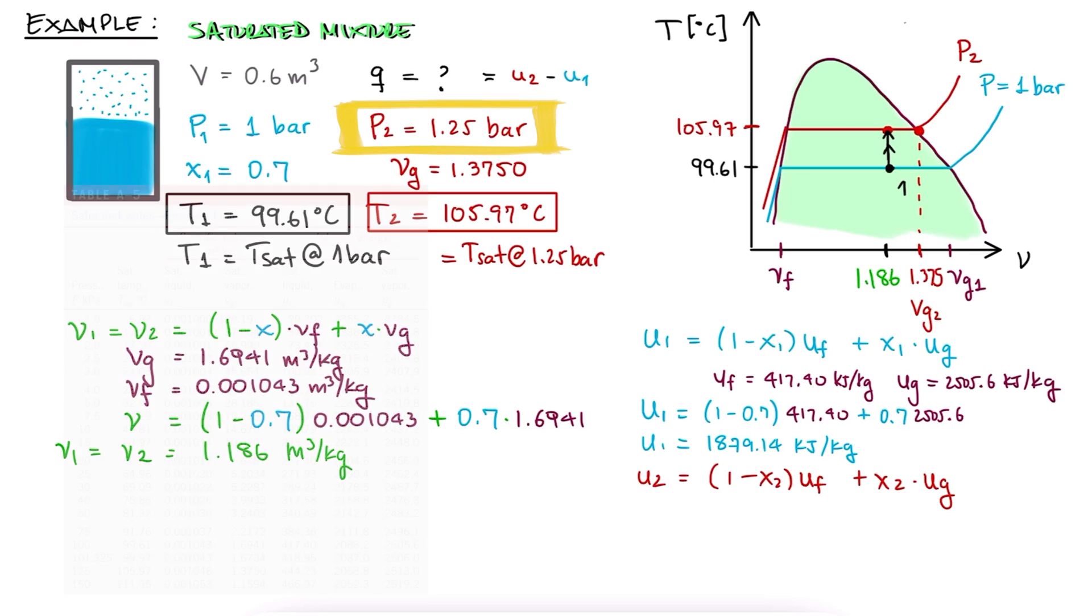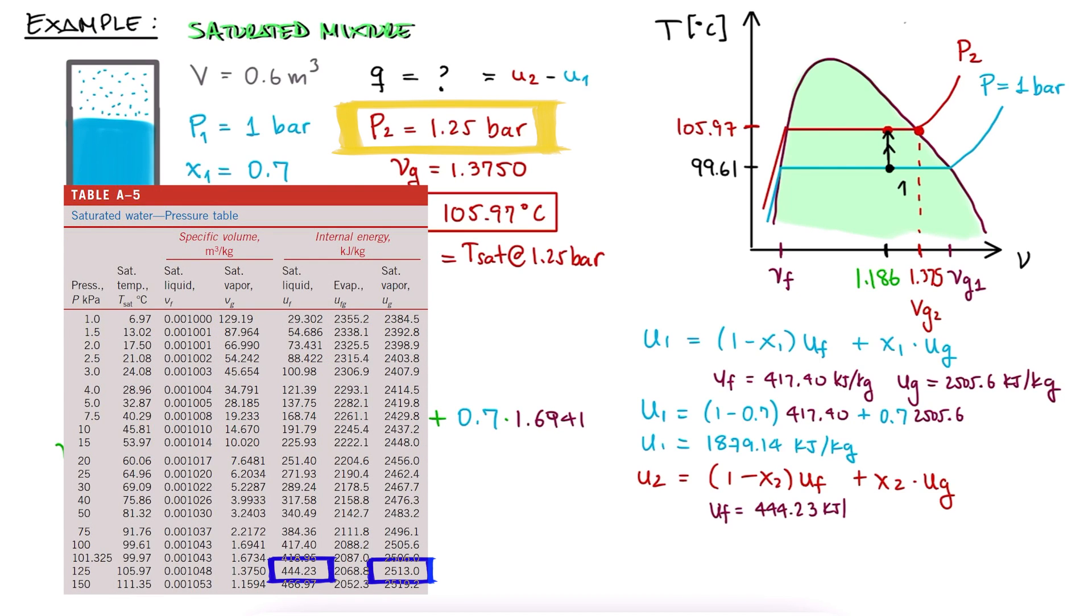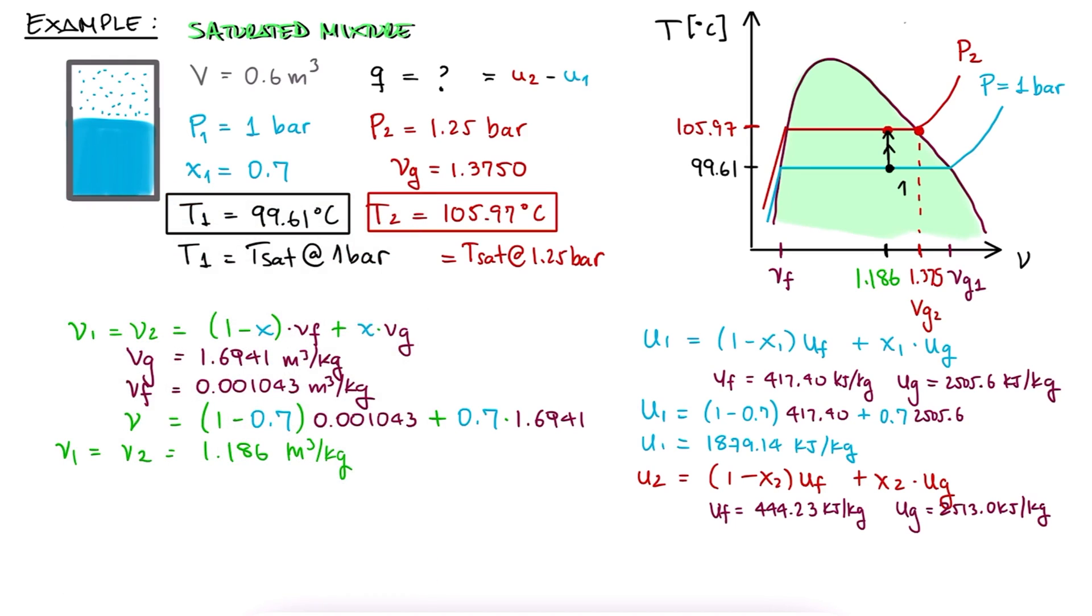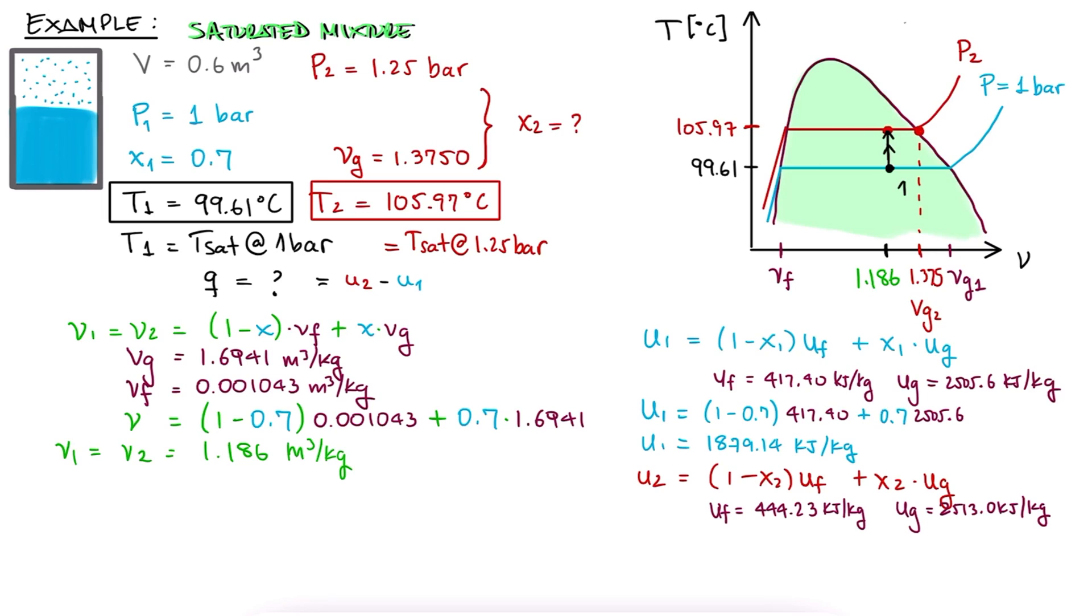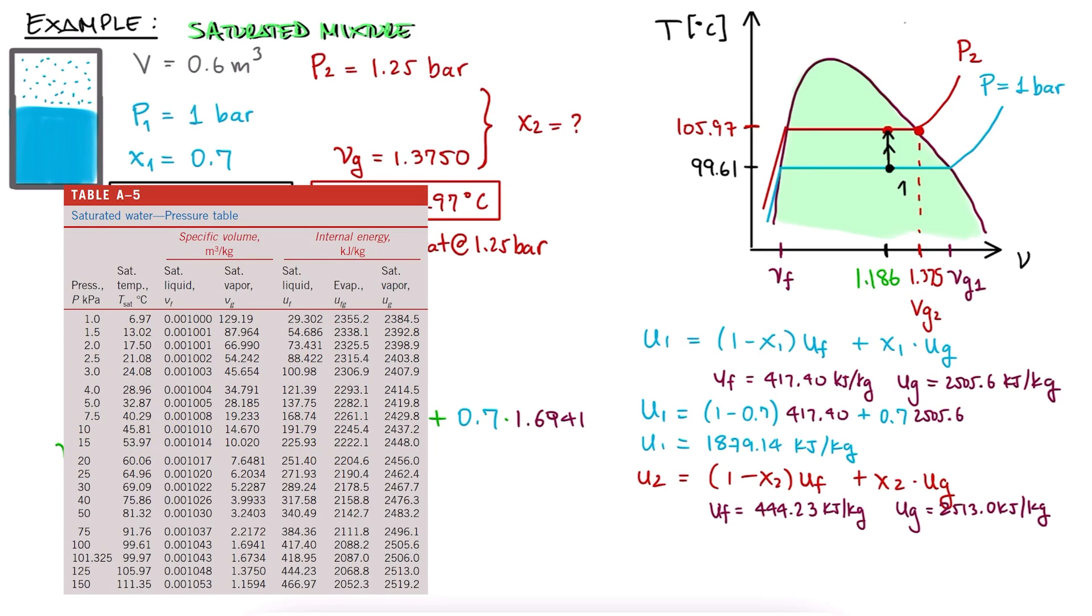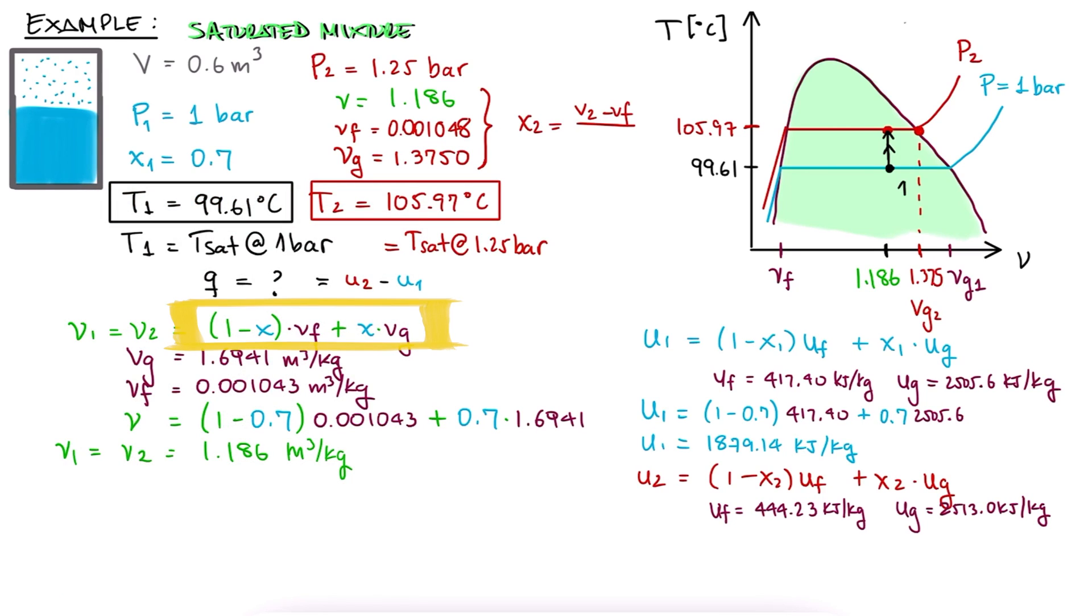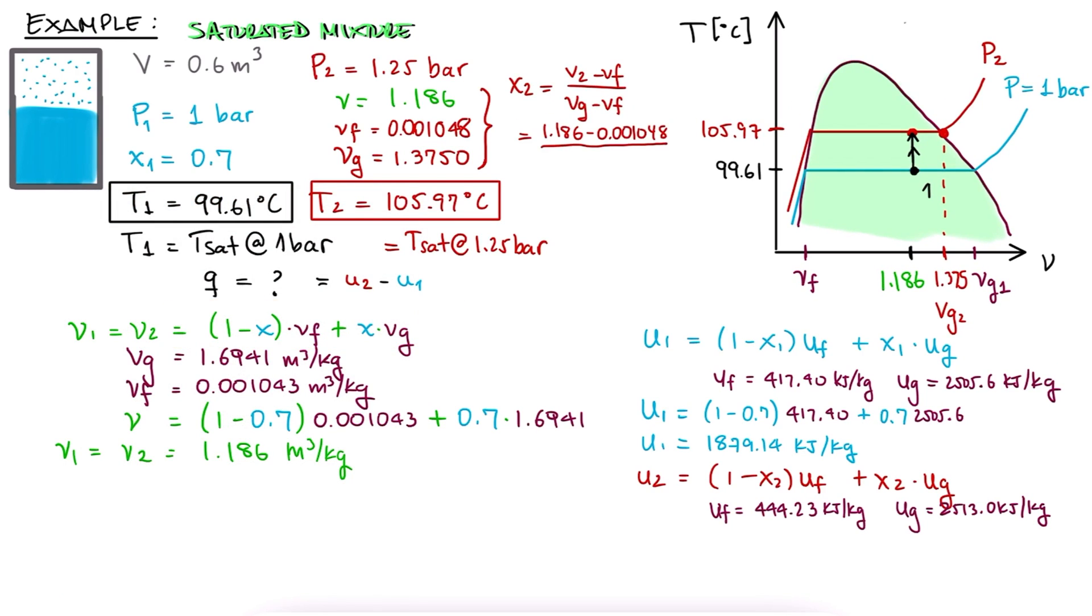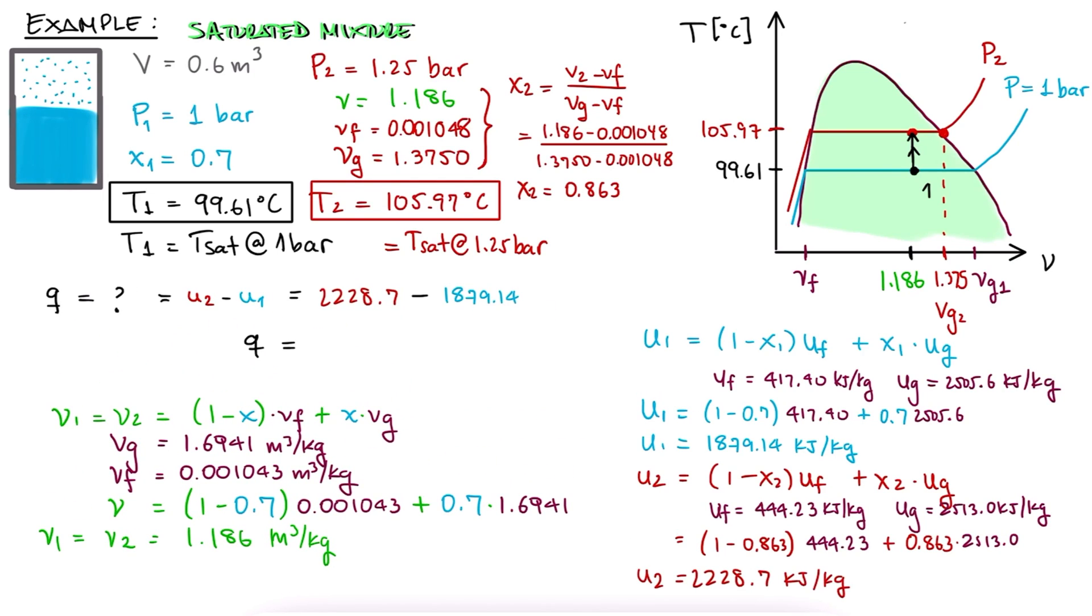For U2, we can also find uf and ug from the table at 1.25 bar, with the difference being that we don't know what the quality is at that higher pressure. Since we already know that the process happened at a constant specific volume, V2 is equal to V1, and with vf and vg for that pressure, and the same expression for quality, although rearranged, we can solve for x2 and find it to be 0.863. Now, knowing the quality of the mixture after adding the heat x2, we can calculate U2, and with U2, the total specific heat transfer. And that's it.